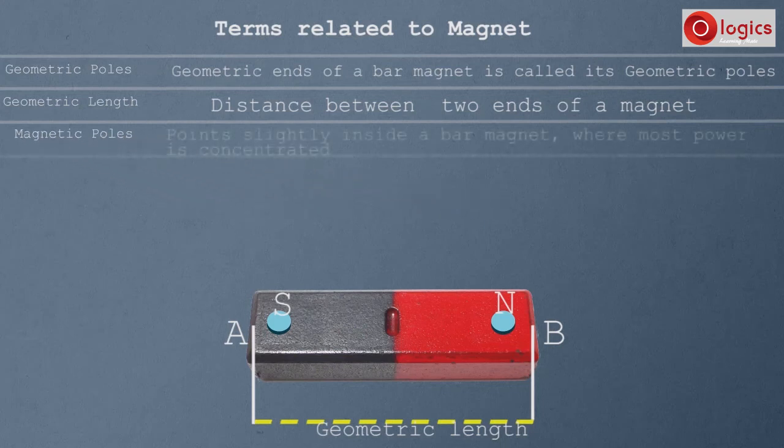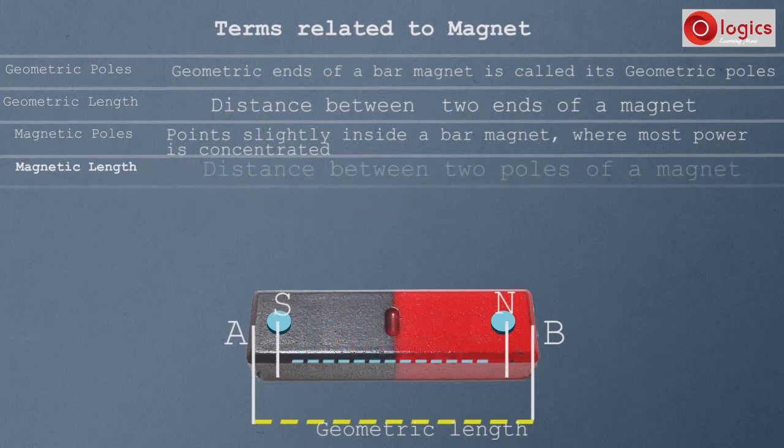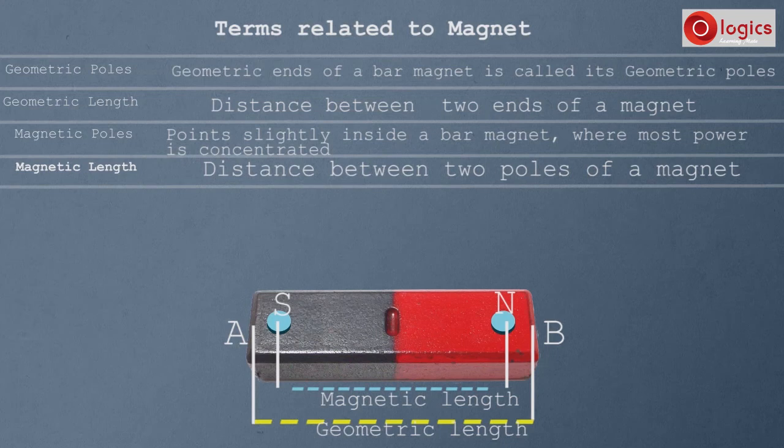The points situated slightly inside a bar magnet, where most power is concentrated, is called its magnetic poles. The length between these poles becomes magnetic length. The distance between two poles of a magnet is called its magnetic length.